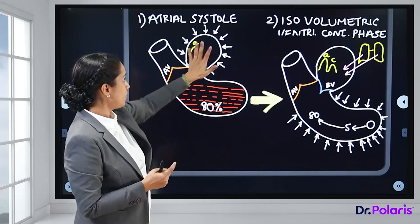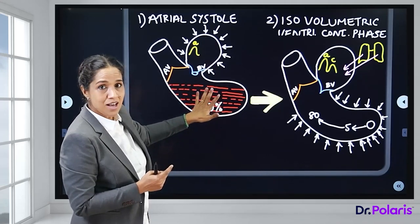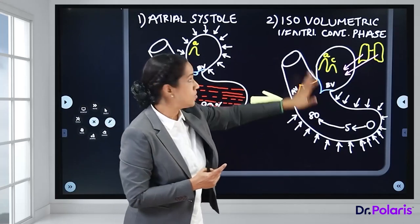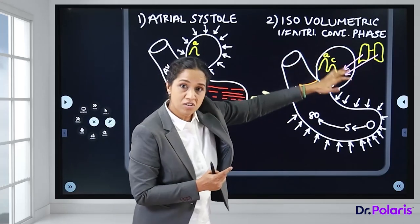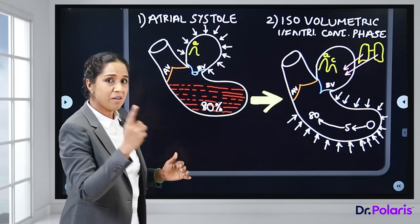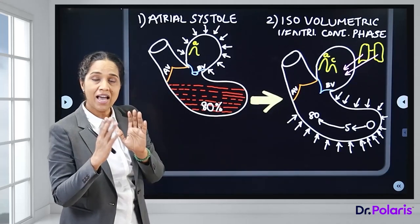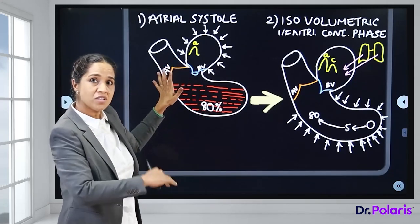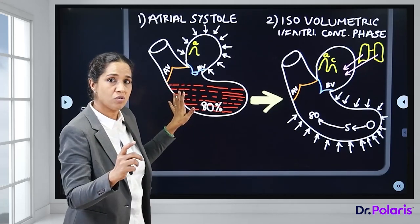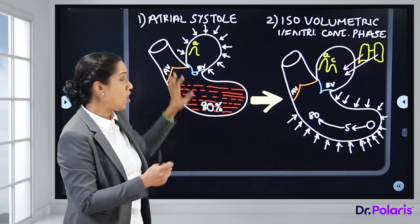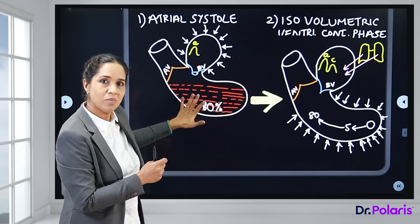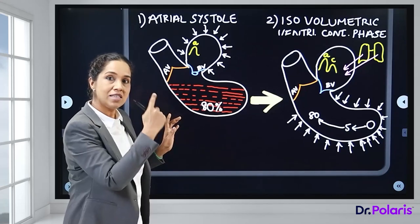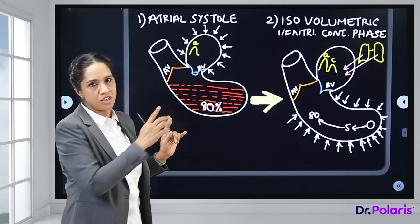The diagram shows the left atria, left ventricle, and aorta. For each phase — starting with atrial systole and progressing to isovolumetric ventricular contraction — you need to track changes in the atria, the ventricle, and the aorta, noting both pressure and volume changes at every step.